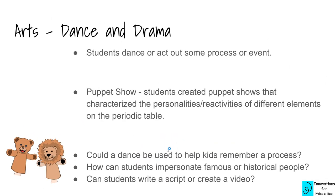Next is the drama hook — students dance or act out some process or event. The example is the puppet show: students created puppet shows that characterized the personalities or reactivity of different elements on the periodic table. Ask yourself: could a dance be used to help kids remember a process? Could students impersonate a famous or historical person? Could students write a script or create a video that represented something you were learning about?